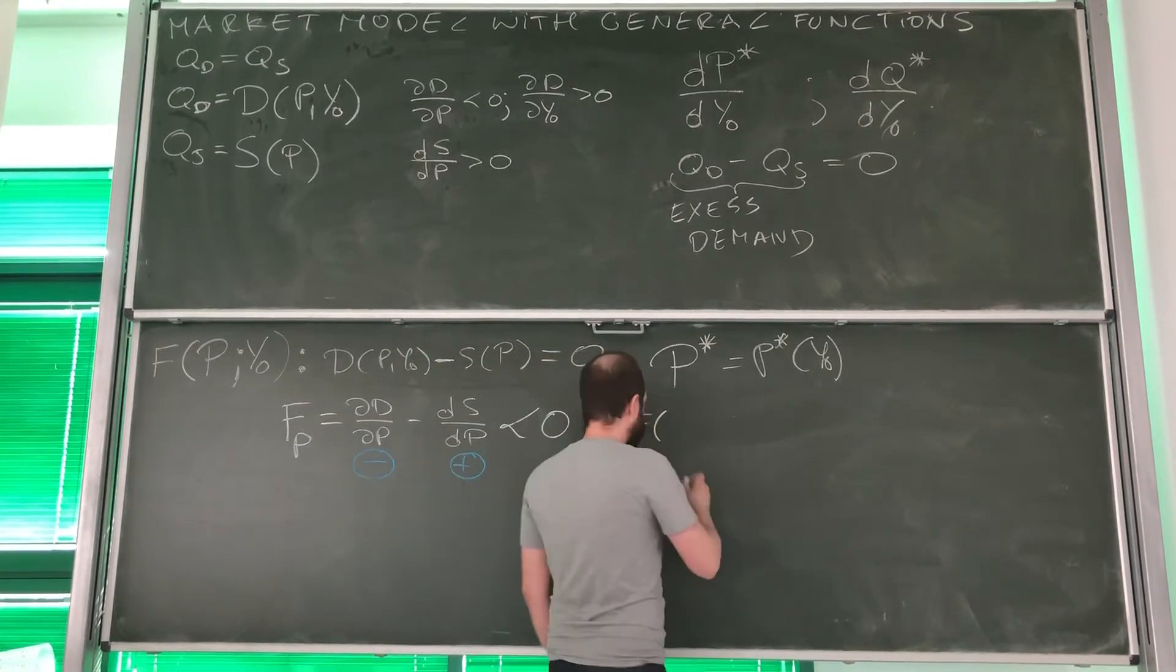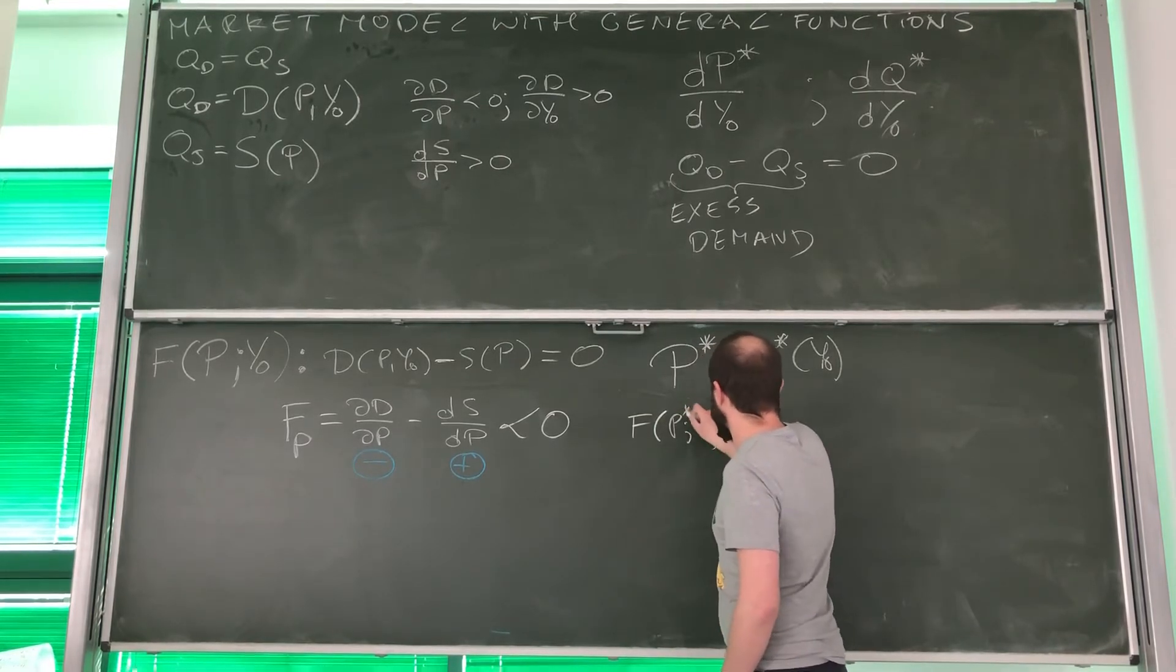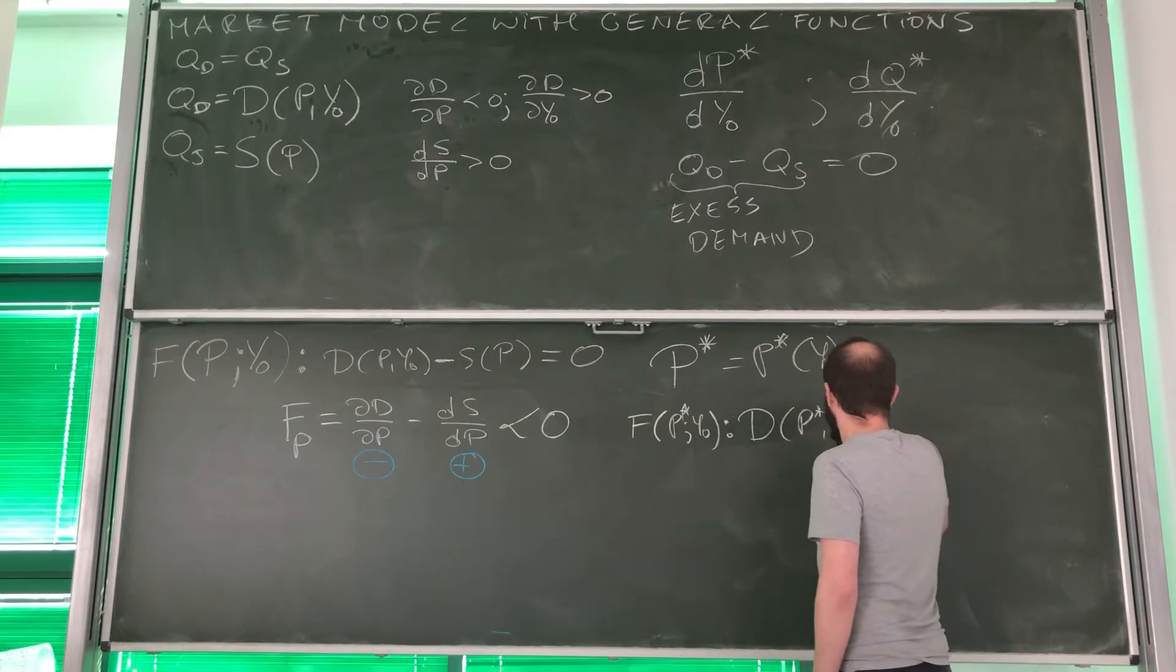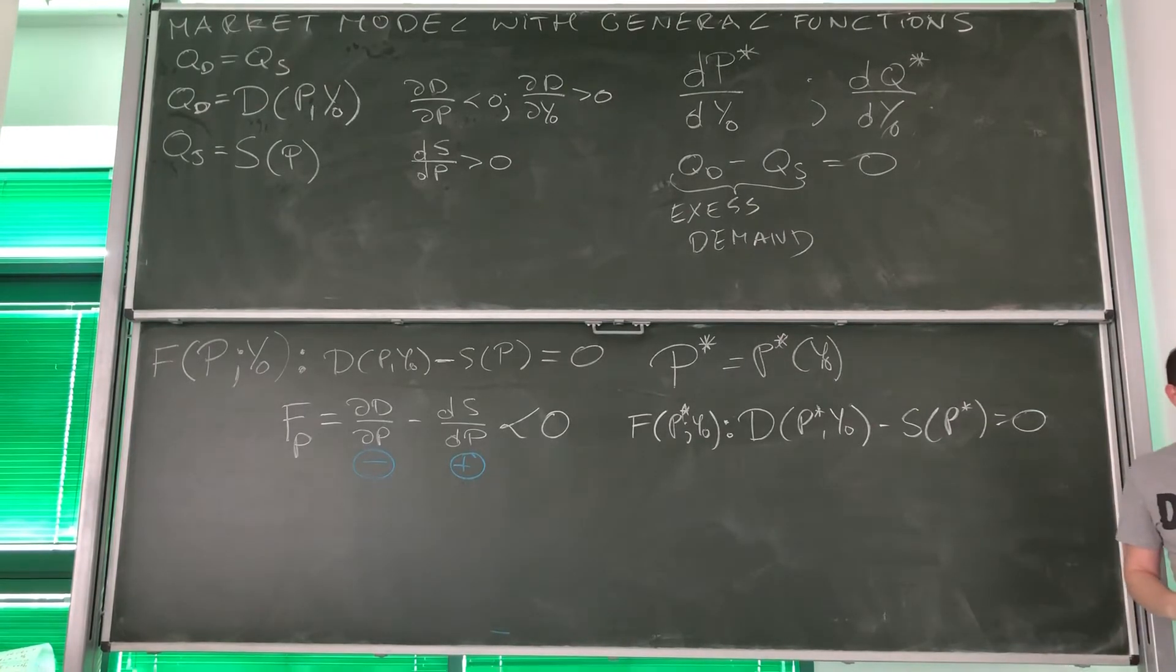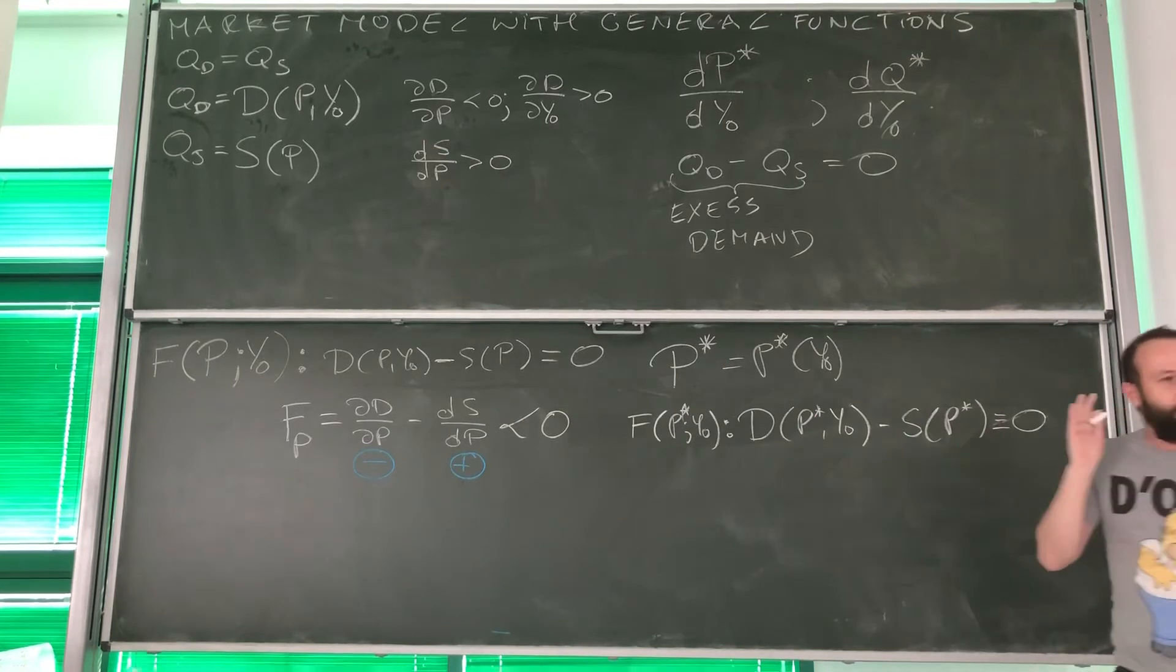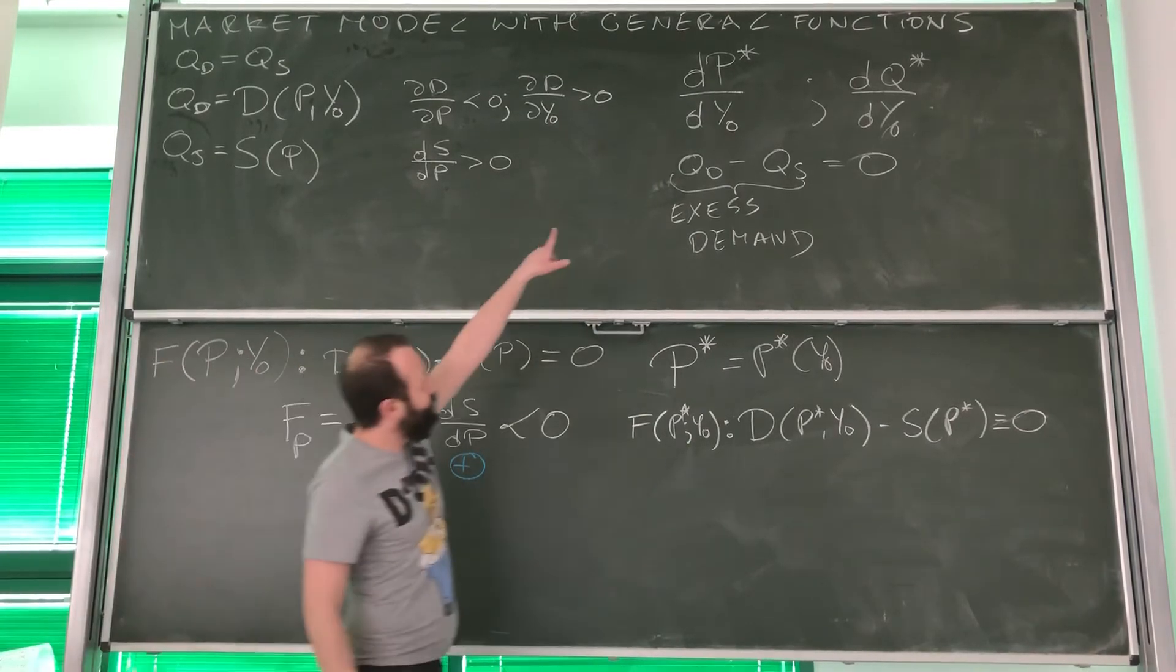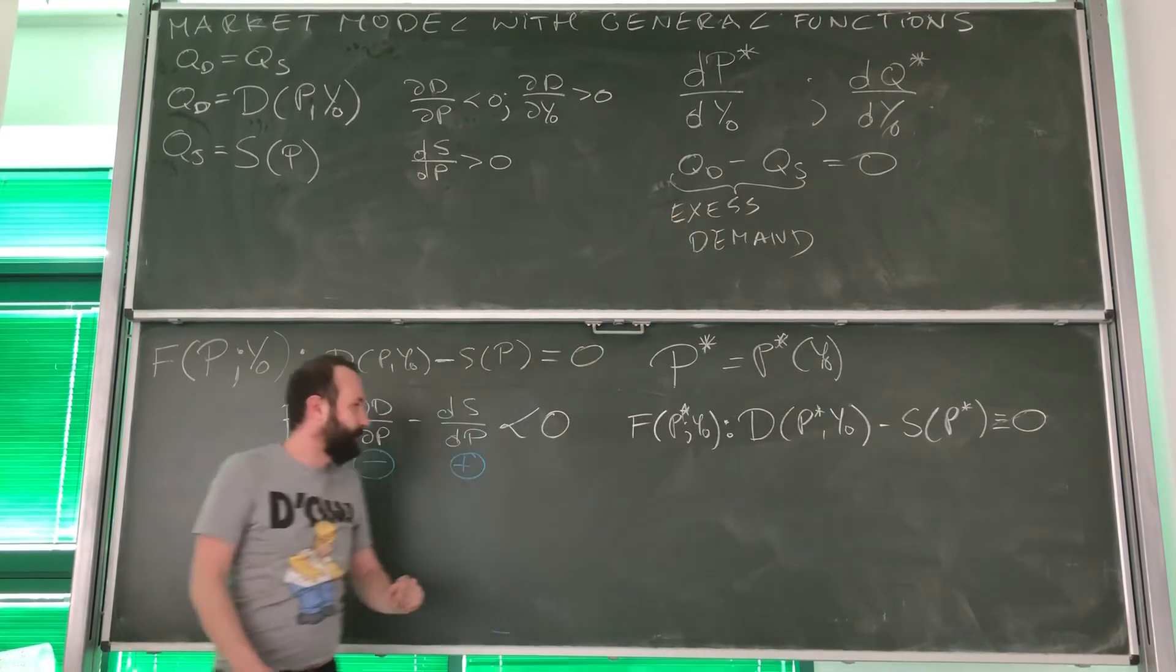So what do we get now is that our F(P,Y0), and we put an asterisk over here, is given as D(P*,Y0) minus S(P*) equals to 0. And look, now it's identical to 0. Now we've got just one more thing to do. We are trying to find the derivative of price, equilibrium price with respect to income.